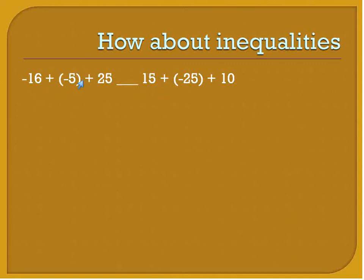So I'm going to start by doing everything that I've said before. Negative 16 plus negative 5 - I'm going to get rid of those parentheses and make it negative 16 minus 5. Doing the same on this side of the inequality. 15 plus negative 25 becomes 15 minus 25. The other numbers remain. 25 is 25, 10 is 10. Now I'm going to join together terms from left to right. Negative 16 minus 5 is negative 21 plus 25. 15 minus 25 is negative 10, and the plus 10 stays.